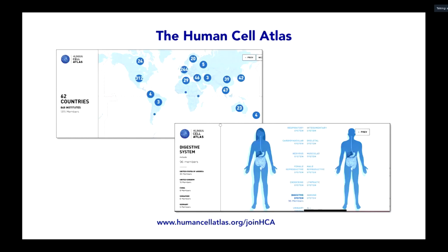For a quick snapshot of the HCA community: the numbers change so rapidly that a slide from two and a half weeks ago already became obsolete — it said 60 countries but is now 62 countries, 848 institutes, spanning about 13,000 members. In many cases those members have labs with additional people not individually registered. We study multiple systems across the body — ideally everything — with about 12 systems of greater focus right now, though any system and any aspect is welcome.